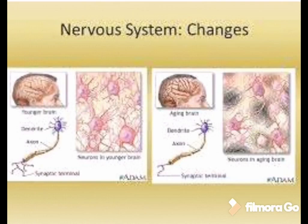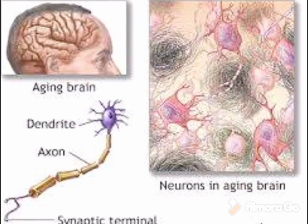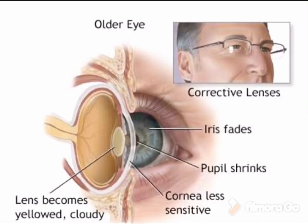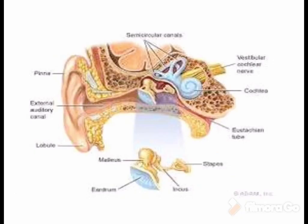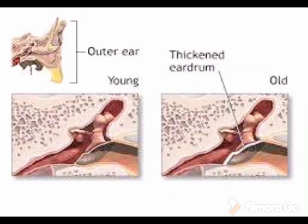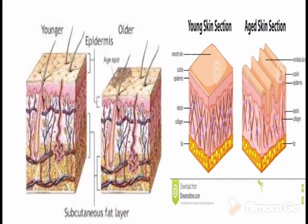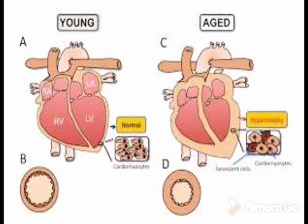As an individual ages, there is a quantitative loss of cells and changes in many of the enzymatic activities within cells. Age-related changes occur at different rates in different people. All the systems undergo gradual changes. The systems include sensory, integumentary, cardiovascular, respiratory, musculoskeletal, urinary, gastrointestinal, and reproductive systems.